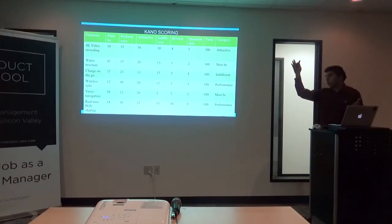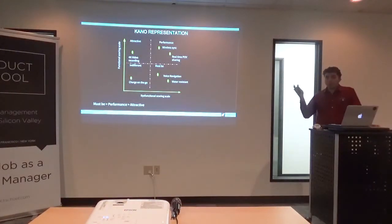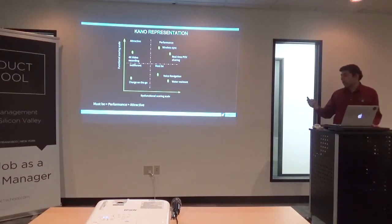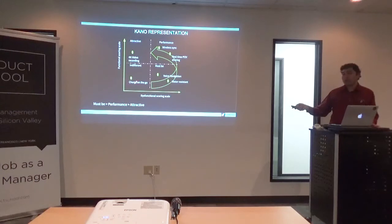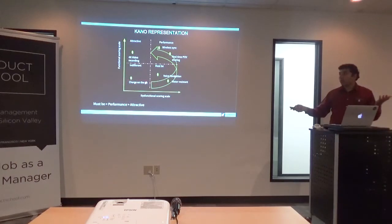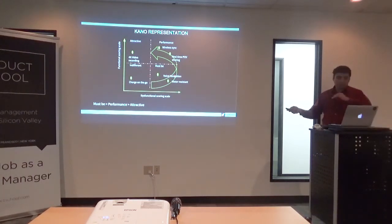Now you've taken the data, surveyed the users, and built the table — so what do you do with it? You go back to the four-quadrant map — must-be, indifferent, attractive, and performance. The very first thing you do is place charge on the go in the indifferent quadrant, because the majority said they were indifferent. Given limited time and resources, you're not going to waste your engineering team's time focusing on that feature. Right at the get-go, you've eliminated features that are a waste for the customer.